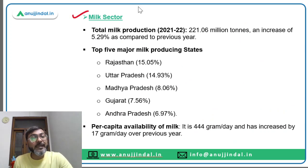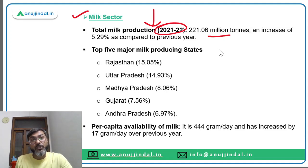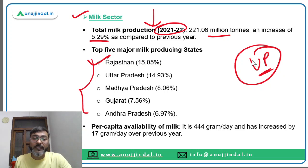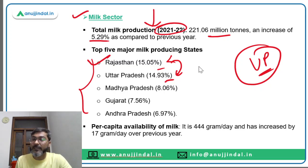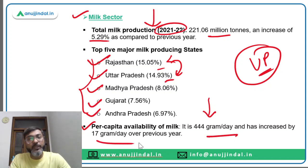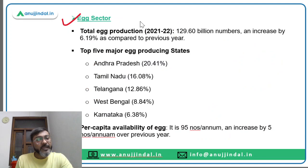Talking about the milk sector: total milk production in financial year 2021-22 was 221.06 million tons, an increase of 5.29 percent. The top five milk producing states are Rajasthan, Uttar Pradesh, Madhya Pradesh, Gujarat and Andhra Pradesh — with Rajasthan topping the list this time. Per capita availability of milk is 444 grams per day, an increase of 17 grams per day compared to the previous year.